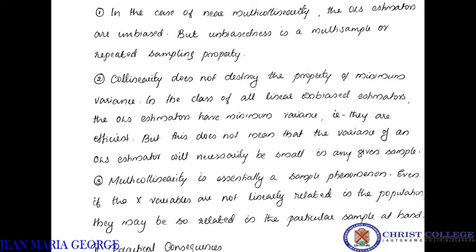Collinearity does not destroy the property of minimum variance. The minimum variance property is part of being the best linear unbiased estimator. In the class of all linear unbiased estimators, all OLS estimates have minimum variance — that is the best property to satisfy. They are efficient estimators: linear, unbiased, and minimum variance.